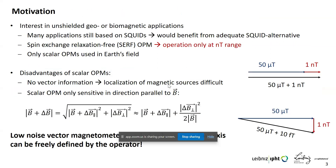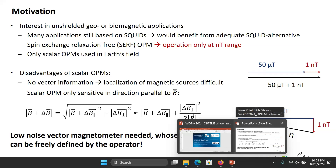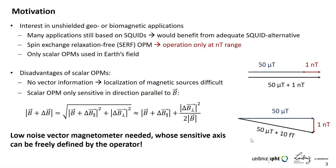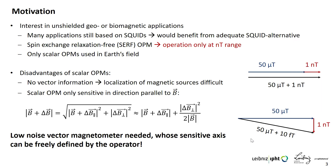Our group is mainly interested in the development of sensors suited for unshielded operation. This is mainly because geomagnetic applications are always unshielded, but also biomagnetic applications would benefit from unshielded operation because magnetic shielding equipment is bulky and expensive. Many of our applications are still based on SQUIDs, and they would benefit from an adequate SQUID alternative.